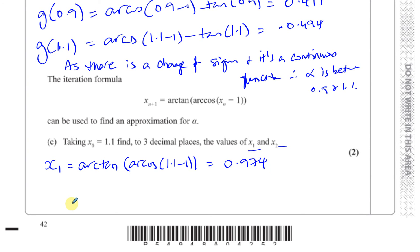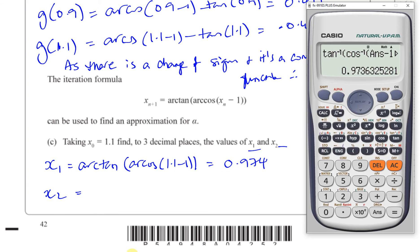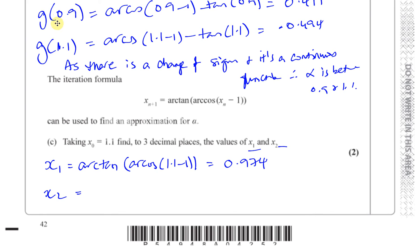For x_2, I press equals again so the calculator substitutes x_1 into the formula. That gives x_2 equals 1.011 to three decimal places. You just show the method once and then list the answers x_1 and x_2. That's the answer to question 11.